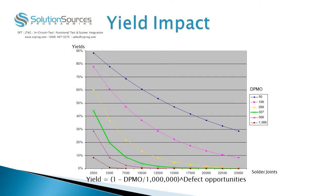Defects per million opportunity numbers and numbers of defect opportunities are key factors impacting yields. This slide shows yields at the y-axis. The x-axis is number of defect opportunities, in this case number of solder joints. The different curves are for different DPMO values from 50 to 1,000. Note that for a circuit board with 15,000 solder joints, the yield is very close to zero. And even for an extremely low DPMO value of 50, the yield is around 50%. Also, for a board with only 5,000 joints, you can see that yields are low for the most.